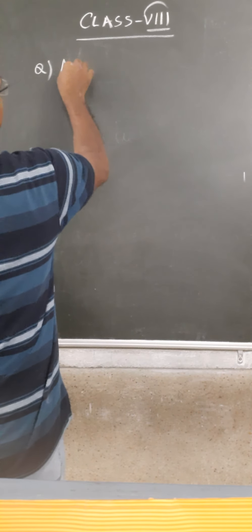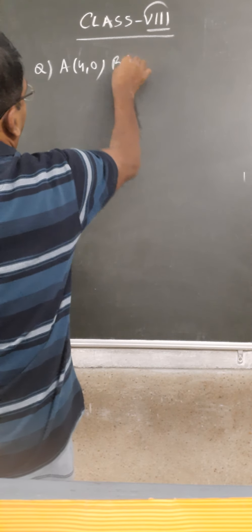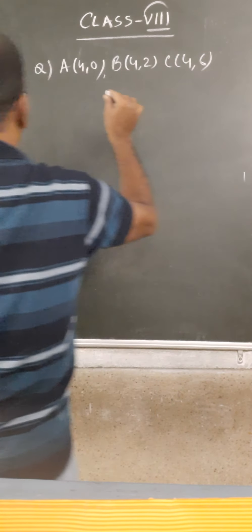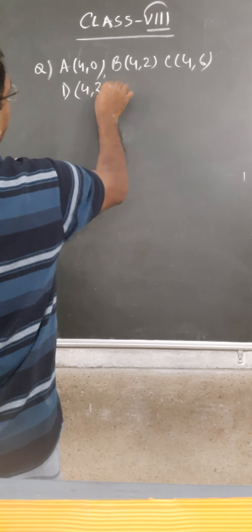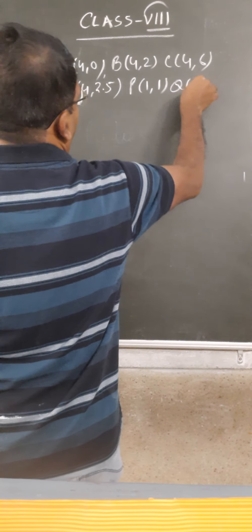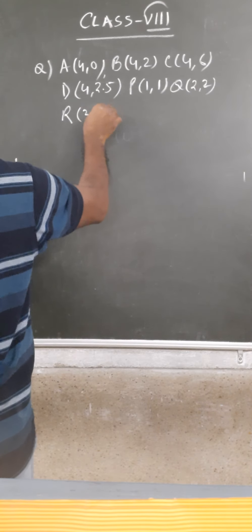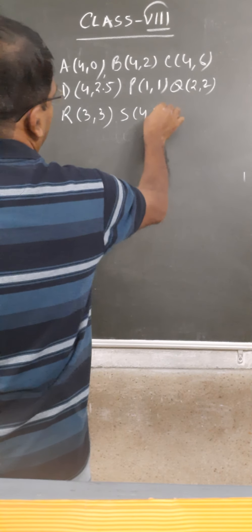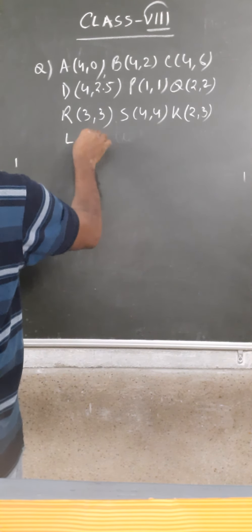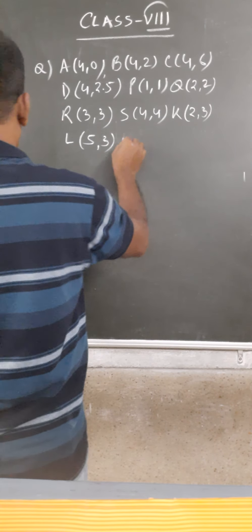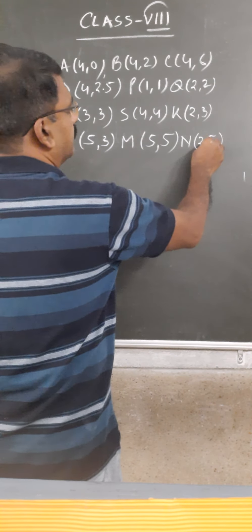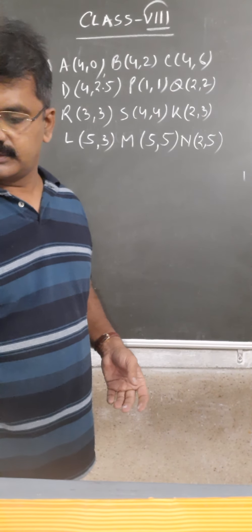The points are: (4, 0), (4, 2), (4, 6), (4, 2.5), (1, 1), (2, 2), (3, 3), (4, 4), (2, 3), (5, 3), (5, 5), and (2, 5). These are the points that we are going to plot on the graph or the coordinate plane.